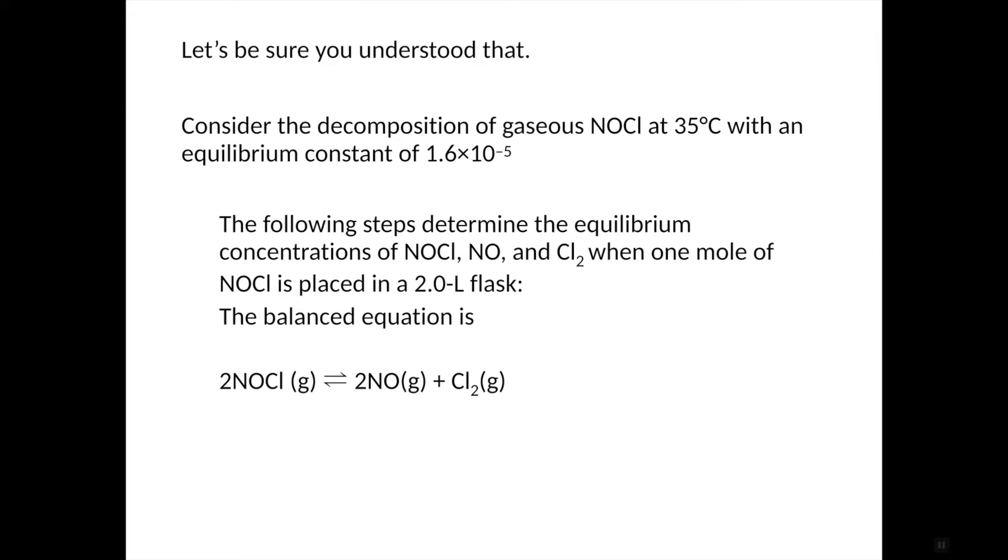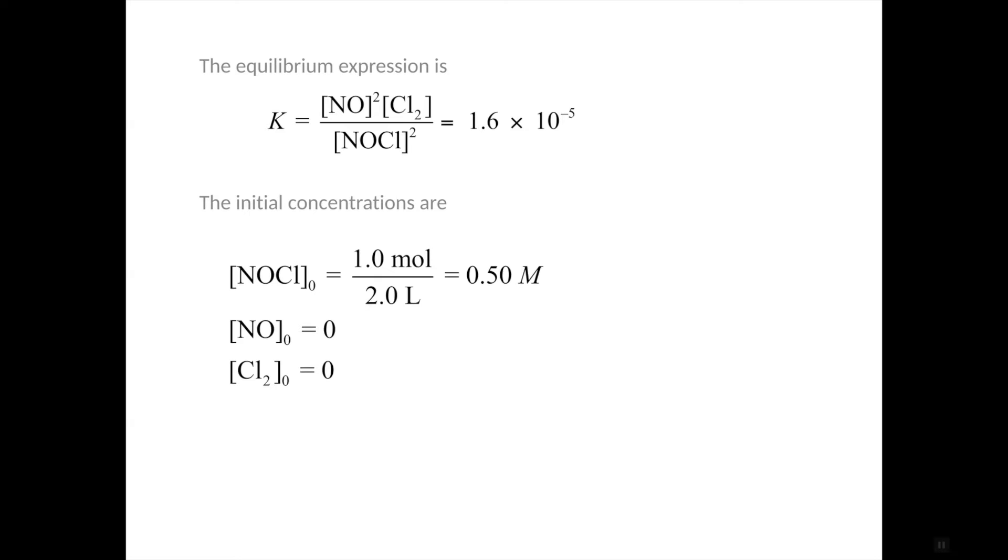So here's an actual example. Consider the decomposition of gaseous NOCl at 35 degrees Celsius with an equilibrium constant of 1.6 times 10 to the negative five, aka small. The following steps determine the equilibrium concentrations of NOCl, NO, and Cl2 when one mole of NOCl is placed in a two liter flask. So this is the equation, as you're seeing in front of you. That would be the equilibrium expression, and that would all be equal to the value that was shown in the equation.